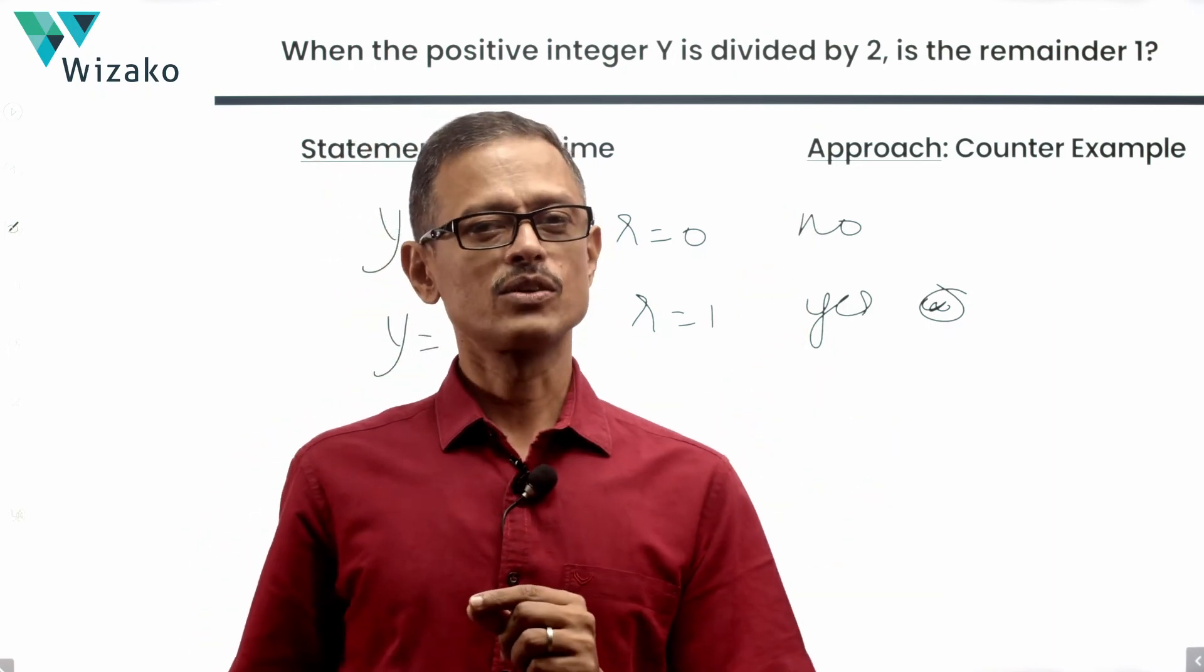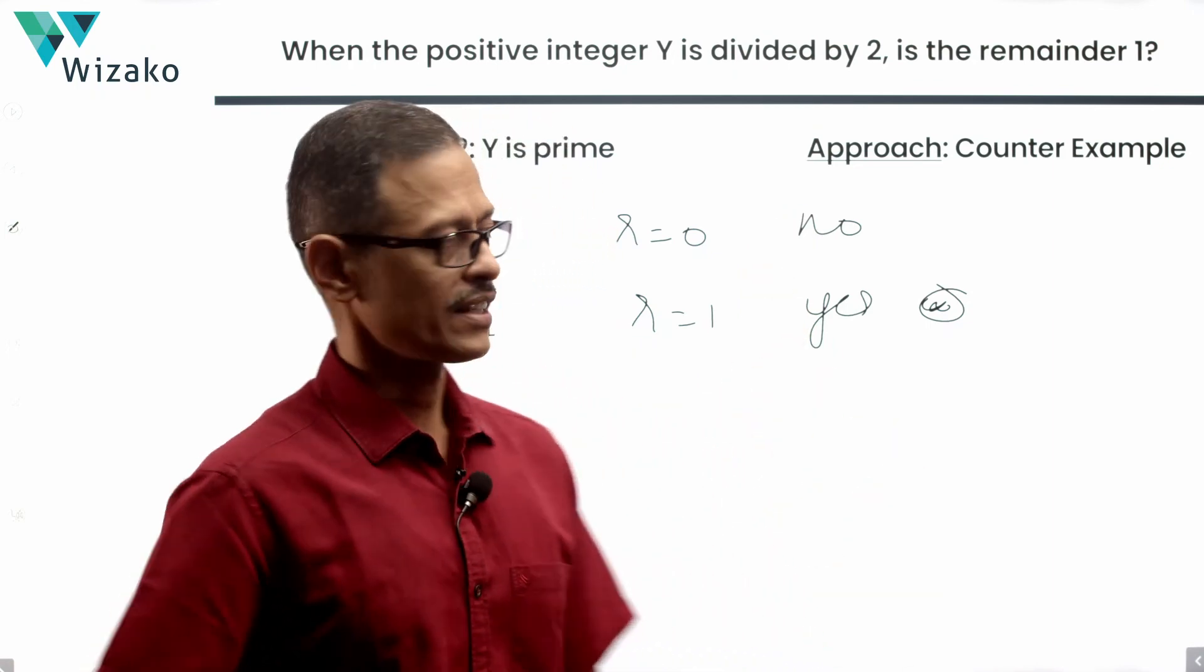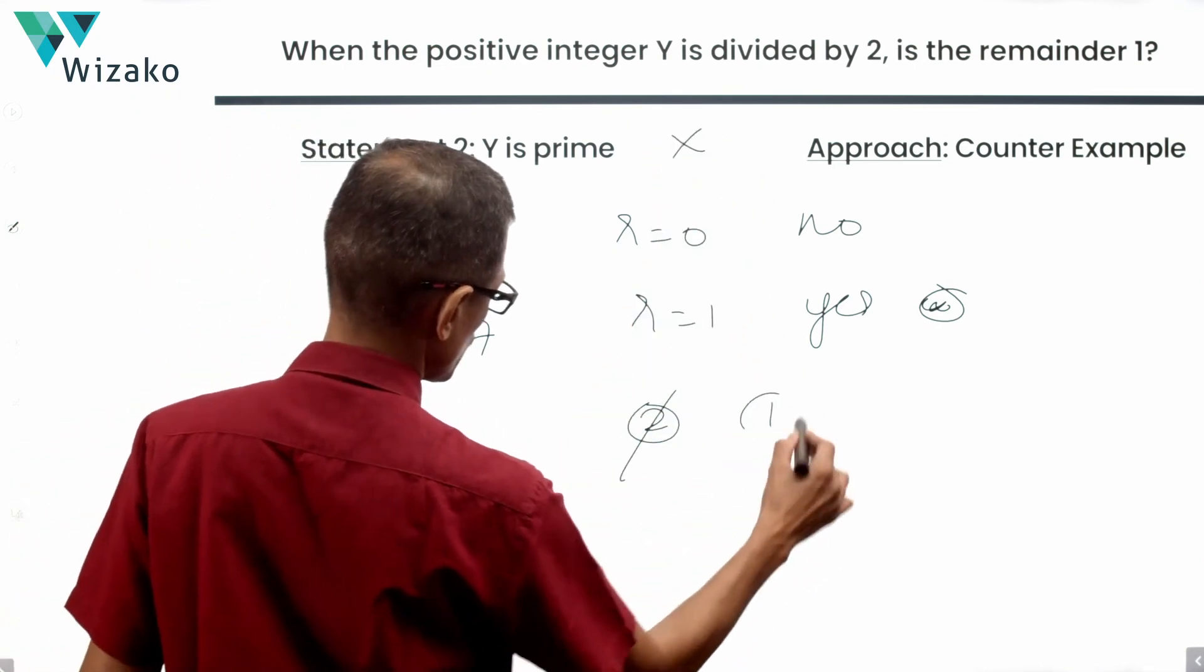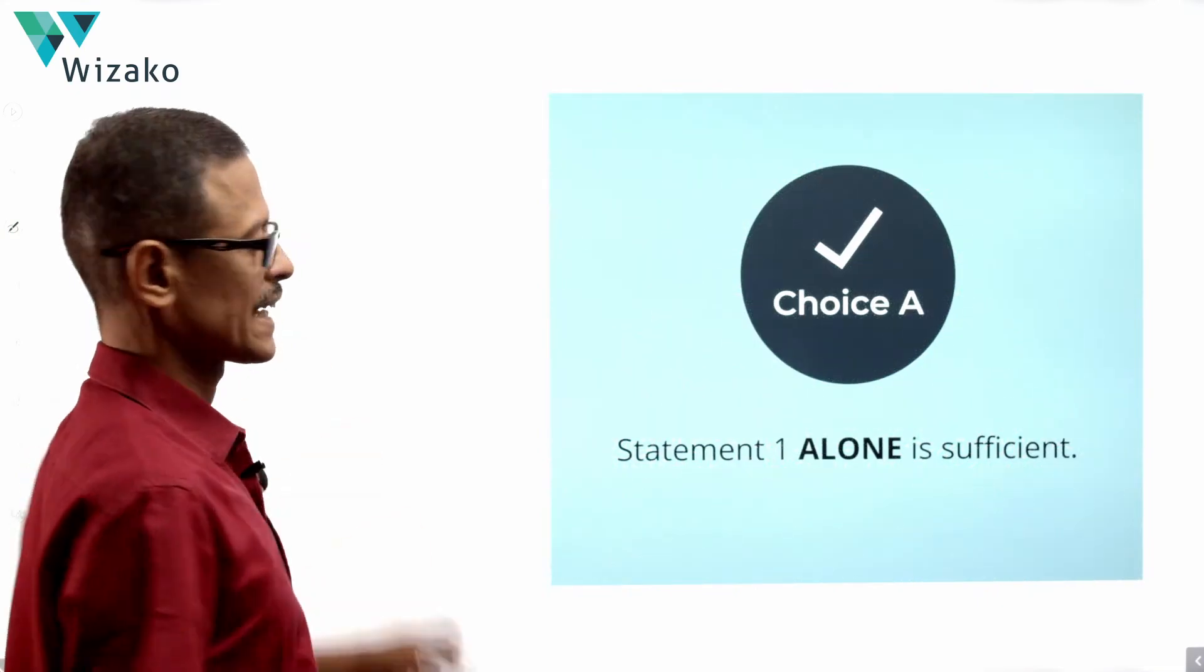Others give us a yes. Even if one single value gives us a no, still we don't have a conclusive answer. So statement 2 alone is not sufficient. 2 alone is not sufficient. 1 was sufficient. So choice A is the correct answer to this question.